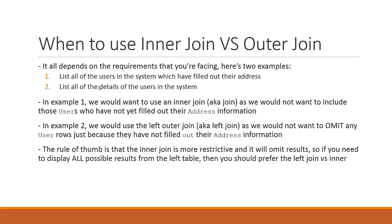So the rule of thumb here is that the inner join is more restrictive and therefore it will omit results. If you need to display all the possible results from a certain table — in this case the left-hand side table — then you should prefer to use the left join instead of the inner join. And the exact same thing can be said if you want to flip it around: you can use right joins, which just gets information from the right-hand side table instead. It's the exact same concept — you just flip it around.